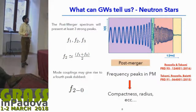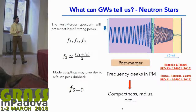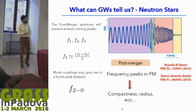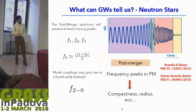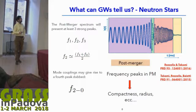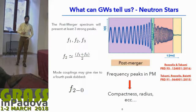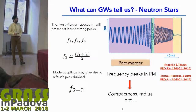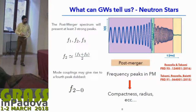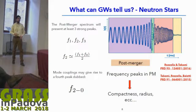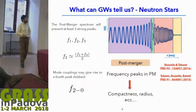From the post-merger, the frequency peaks are strictly related to other parameters of the equation of state. Basically, we have three strong frequency peaks, and eventually we can also have a fourth peak caused by mode couplings in the neutron star remnant.